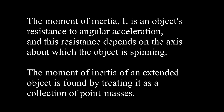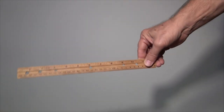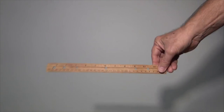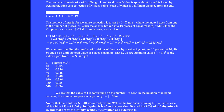The moment of inertia is an object's resistance to angular acceleration, and this resistance depends on the axis about which the object is spinning. The moment of inertia of an extended object is found by treating it as a collection of point masses. Here is a bar or stick being rotated about its end. The moment of inertia of a stick of length l and mass m spun about its end is found by treating the stick as a collection of n mass points, each at a different distance from the end. The moment of inertia for the entire collection is given by the sum I equals m sub i r sub i squared, where the index i goes from 1 to n.